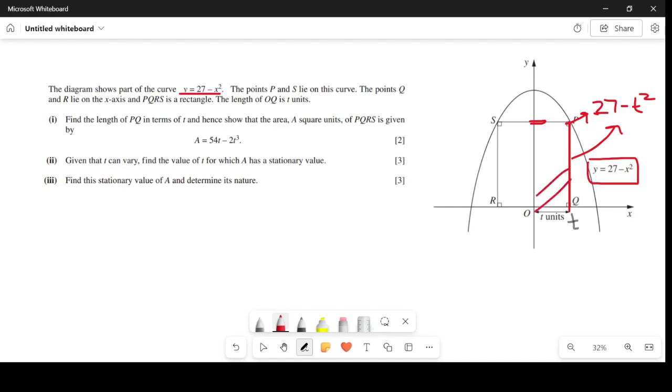Now we need an expression for area of this rectangle. That's going to be length times width. The length is t plus t, which is 2t, and the vertical length is 27 minus t squared. So area equals 2t times 27 minus t squared. Expanding, we get 54t minus 2t cubed.